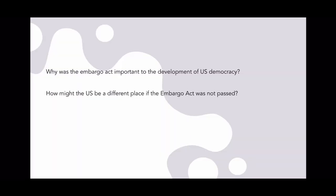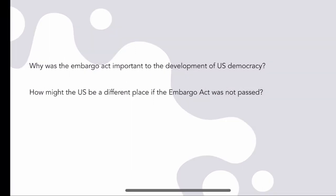The Embargo Act of 1807 was important for the development of US democracy, as it was one of the early major acts passed by the federal government that had an effect on the entire nation. It can be seen as a test of the federal government's power at the time. If the Embargo Act had never happened, it's possible the economy would have had a different trajectory, and the federal government could have been viewed as limited in its ability to regulate commerce and deal with foreign relations.